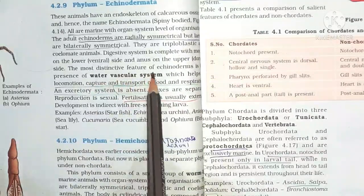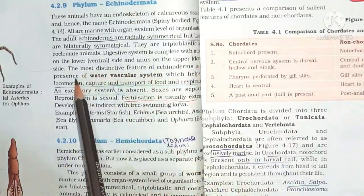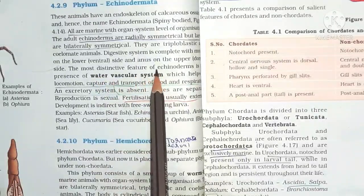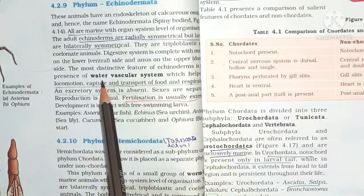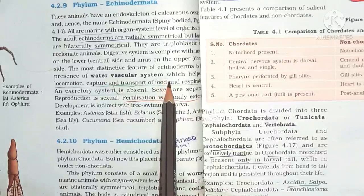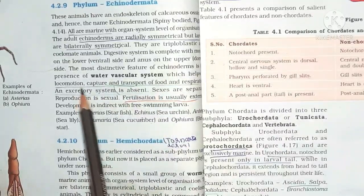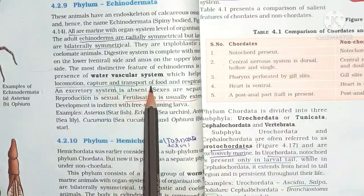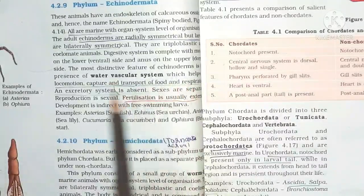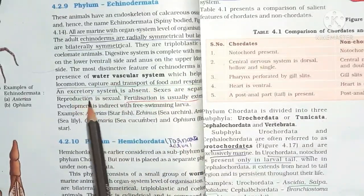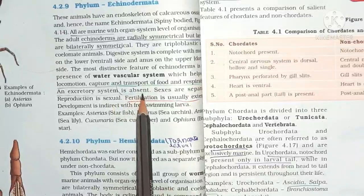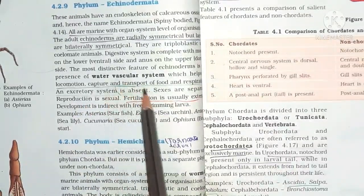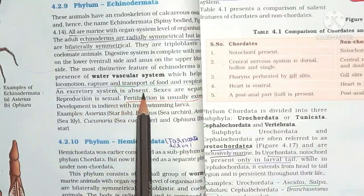The most distinctive feature of Echinodermata is the presence of a water vascular system, which helps in locomotion, capture and transport of food, and respiration. The excretory system is absent.